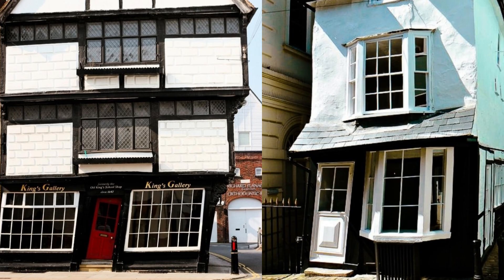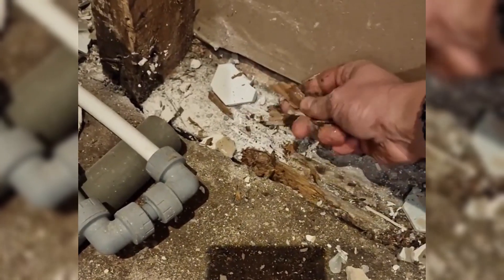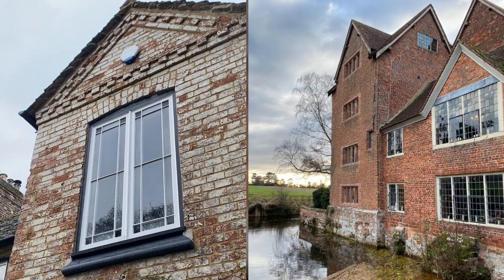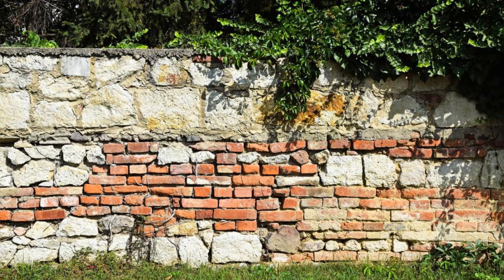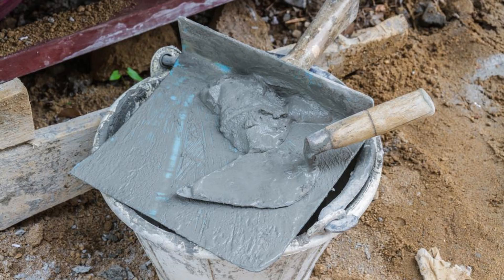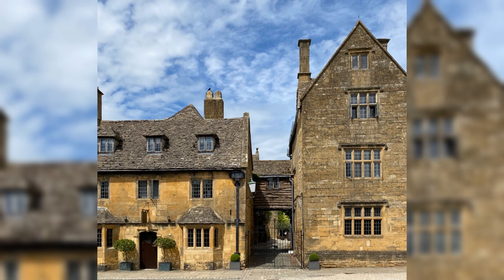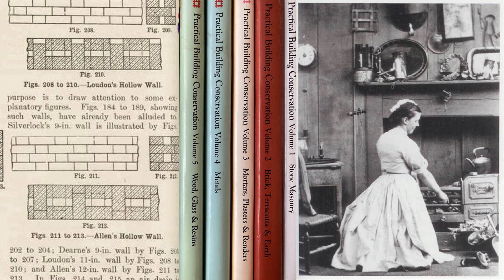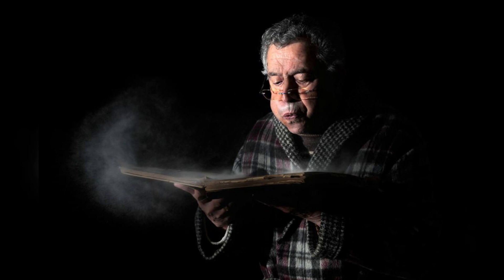Traditionally built buildings are actually incredibly simple, providing you maintain this single core assumption: don't ever try to block the free movement of moisture, and it will never be trapped and will never cause decay. The reason these buildings have stood for so long is because they've used natural materials available at the time — no cement, no plastic membranes. The architects and designers of our homes from yesteryear focused not on moisture blocking but on moisture management.